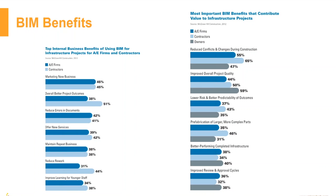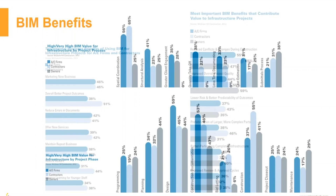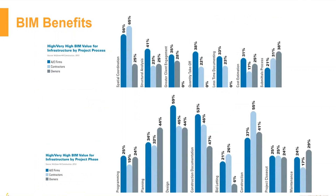Companies are starting to connect different BIM applications to other applications. When most companies first start using BIM, they look at the low-hanging fruit — reducing rework, making projects better, and using it for marketing. You might think BIM is just 3D, because that's a lot of what we see. But 3D is really a benefit or side effect of the BIM process. It lends itself to visual coordinating and using project results to show off what you've done, which can be used for marketing.